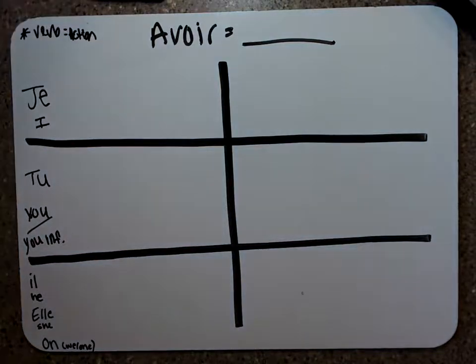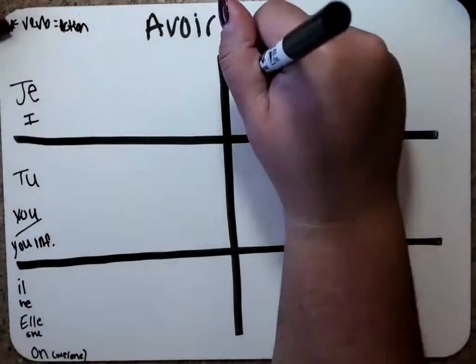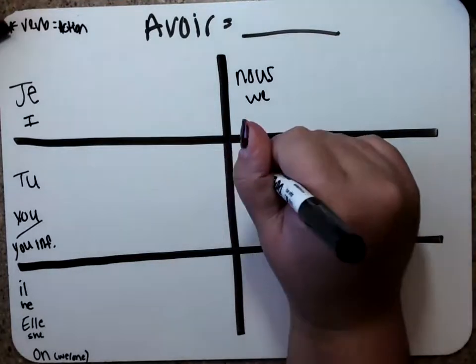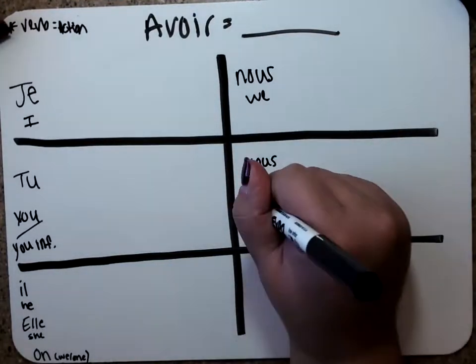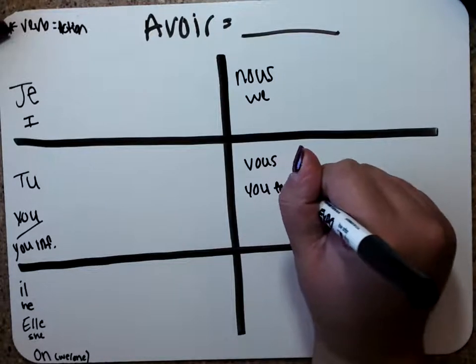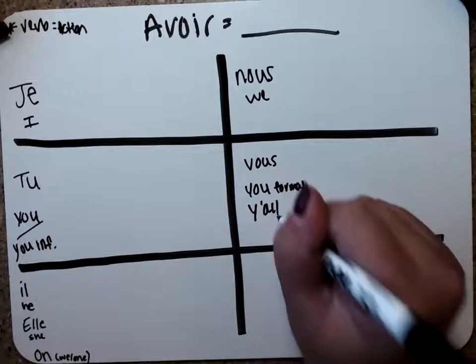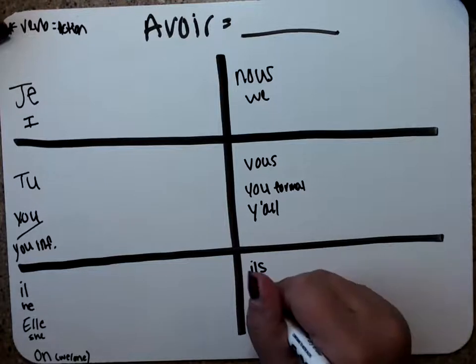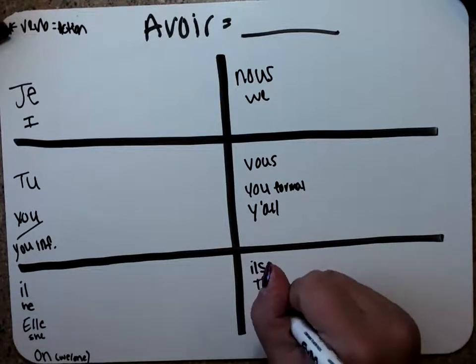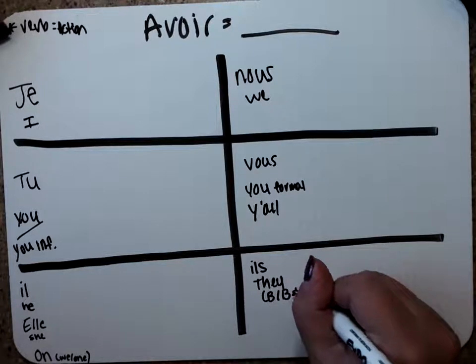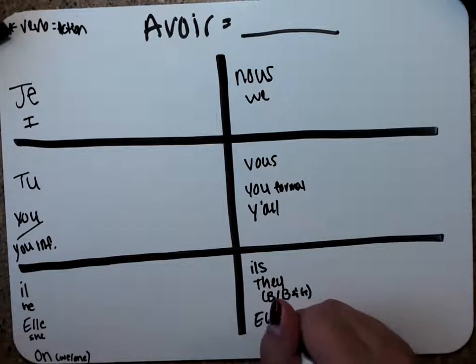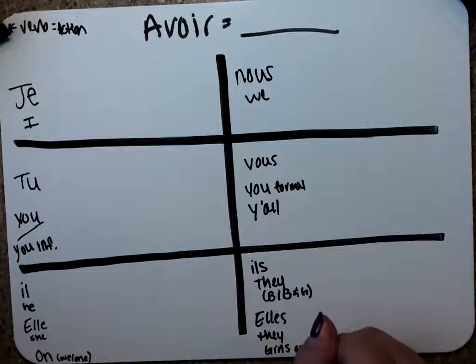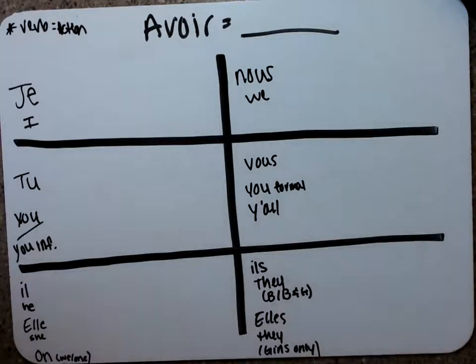Up in this top right box over here, we have nous, and so nous means we. Then we have vous, and vous means you formal, y'all, or y'all if you're talking to more than one. And then our last box in the bottom right, we have ils with an S, which means they for boys or boys and girls. And then we have elles, which means they for a group of girls only.